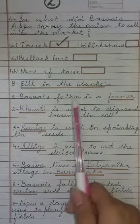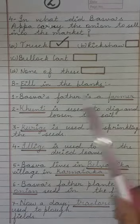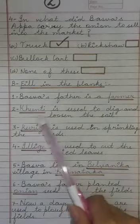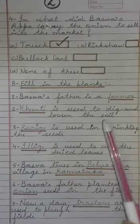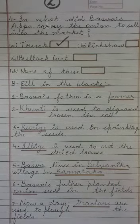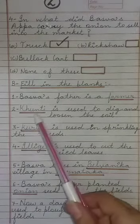Fill in the Blanks. First: Baswaa's father is a ___. Baswaa ke father kya hai? Answer: Farmer. Next: ___ is used to dig and loosen the soil. Kya use kiya jata hai soil ko dig aur loose karne ke liye? Answer: Khunti.